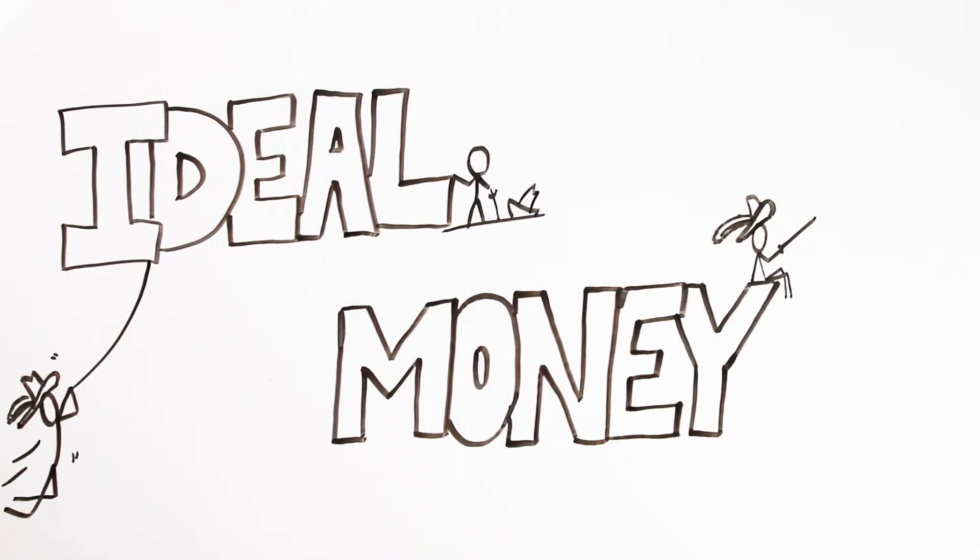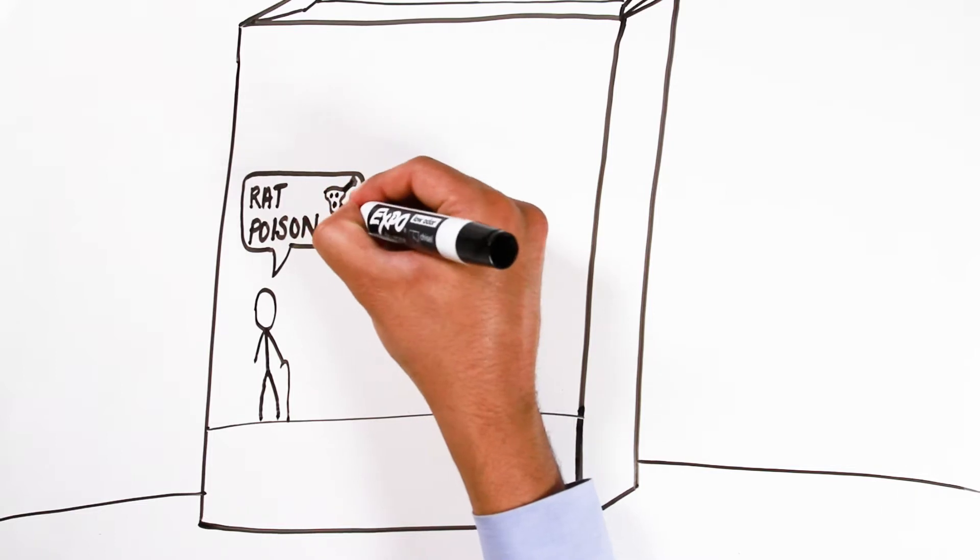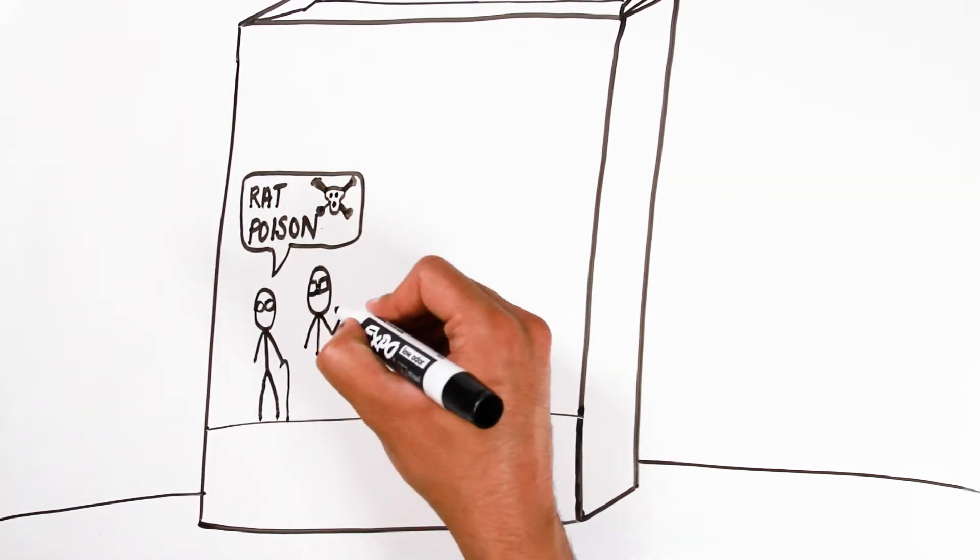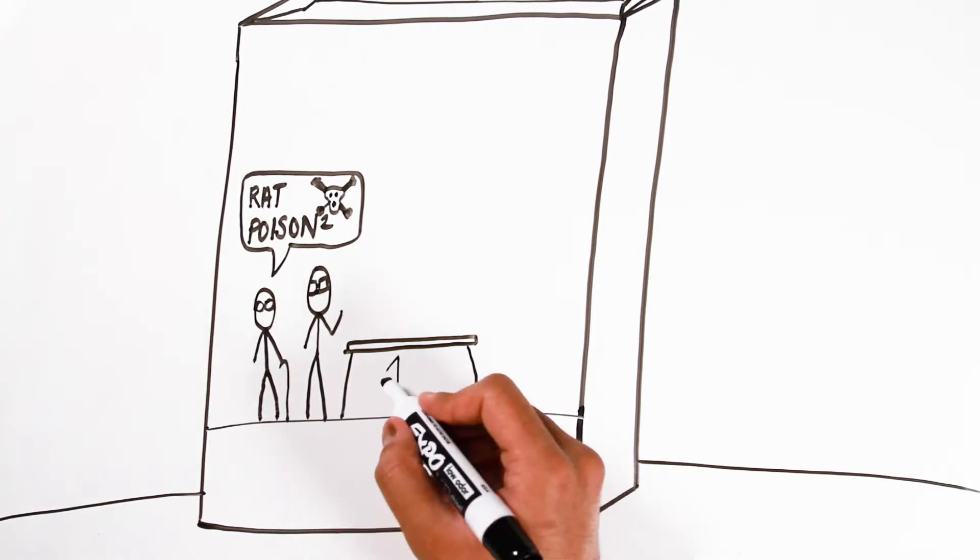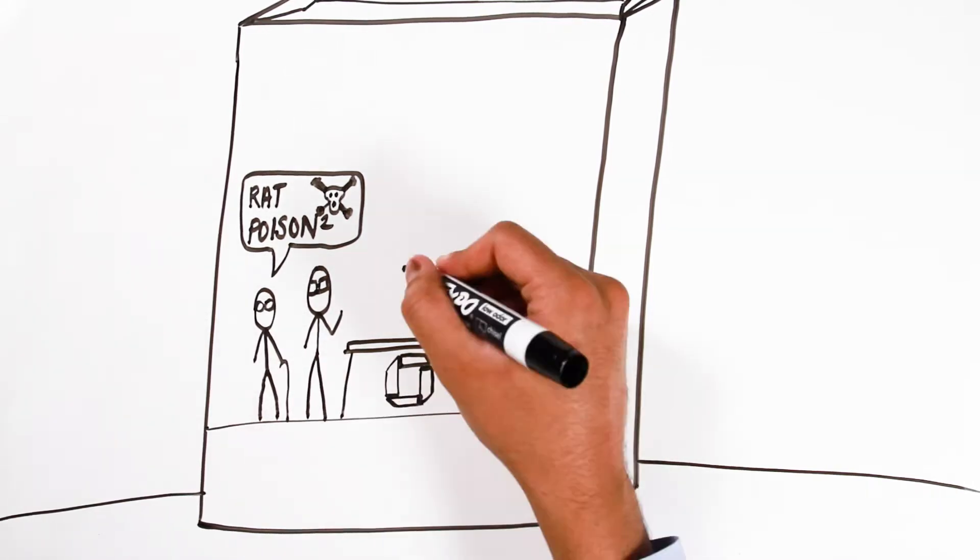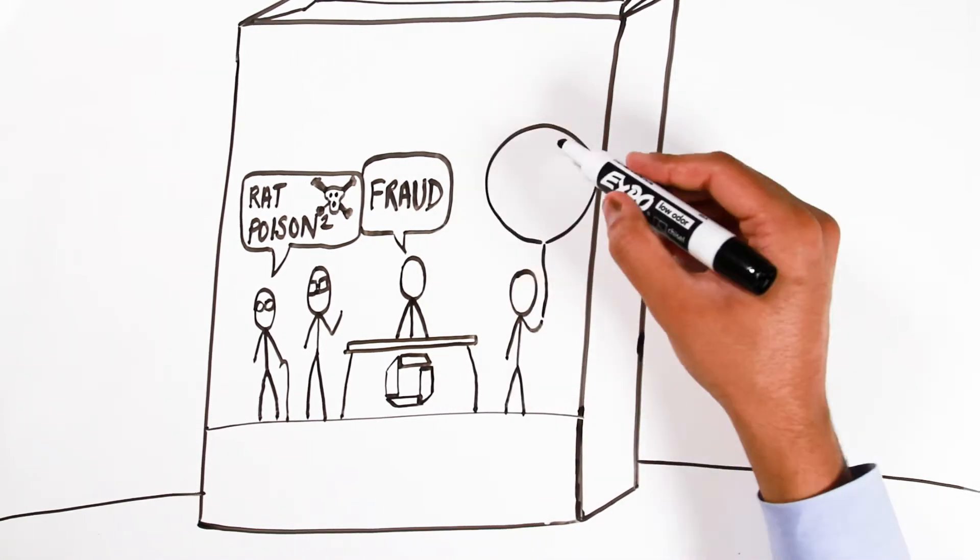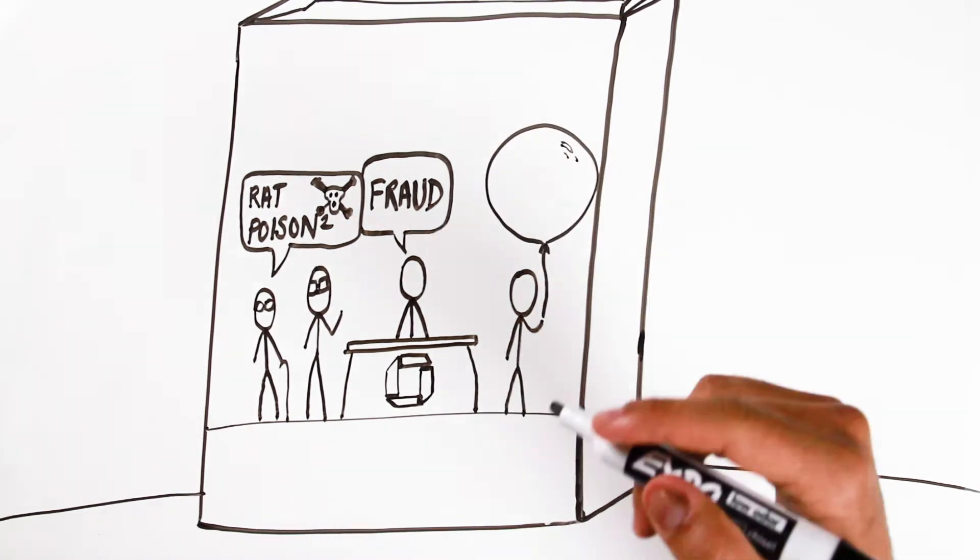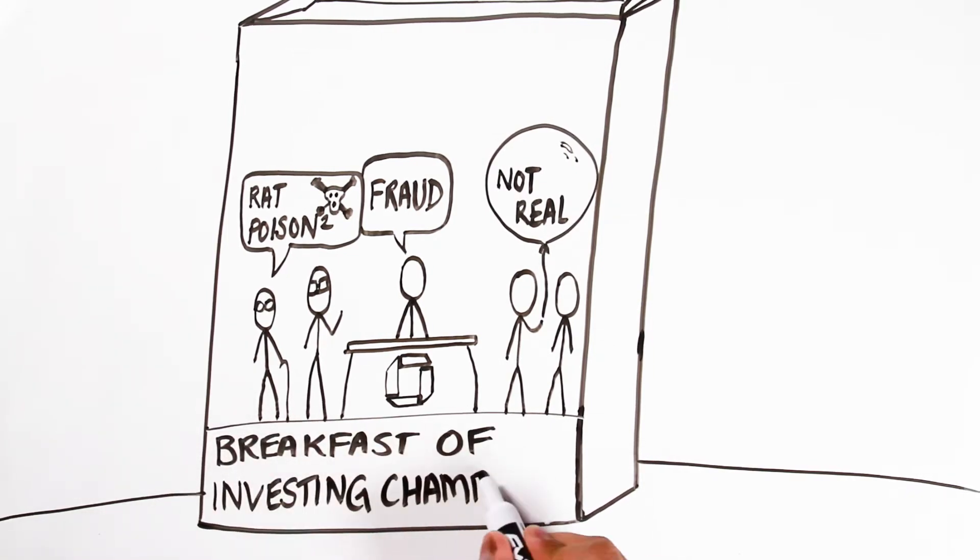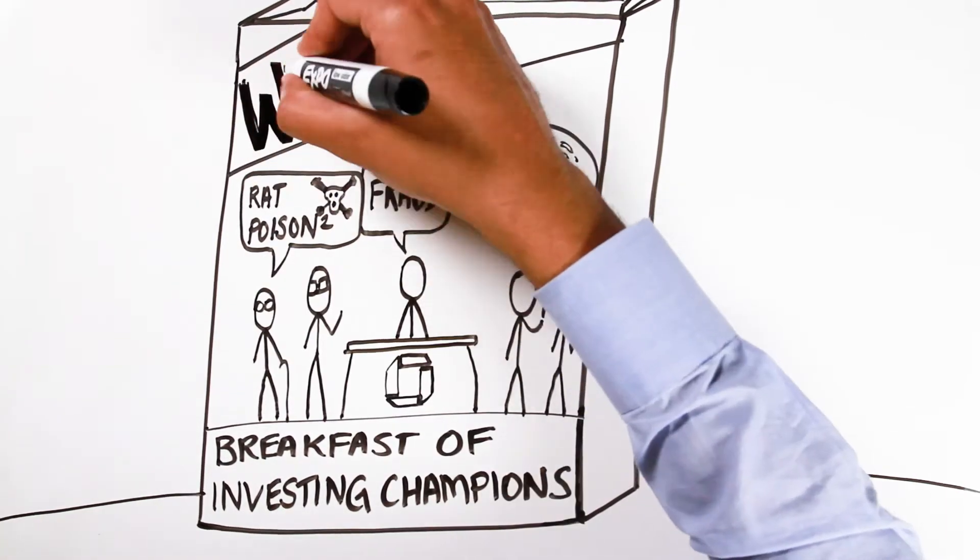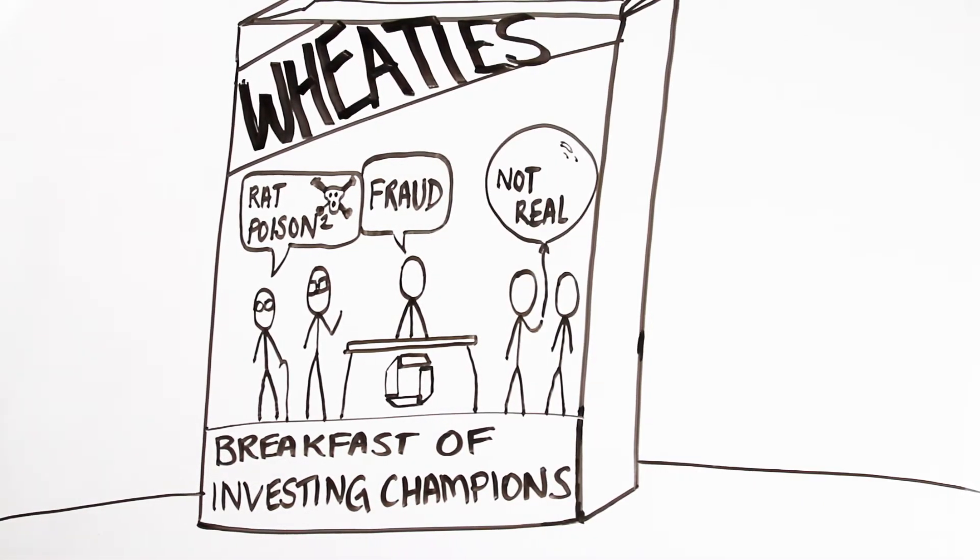Ideal money. Charlie Munger called it rat poison. Warren Buffett called it rat poison squared. Jamie Dimon called it a fraud. Bob Schiller, a man who should know, called it a financial bubble. And Howard Marks said they are quote unquote not real. If there was a Wheaties box for great investors and financial luminaries, these men would be on it. What are they all talking about? They're talking about Bitcoin.